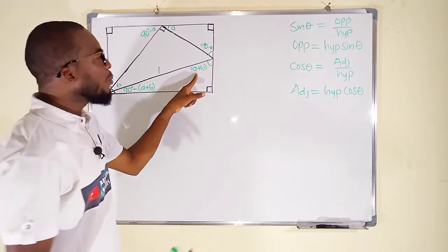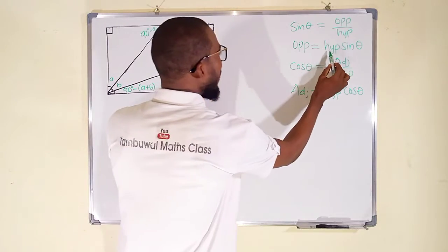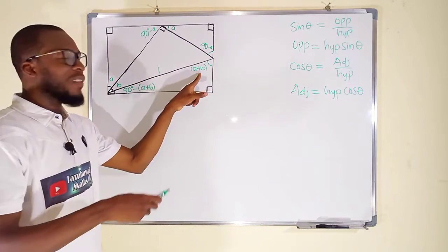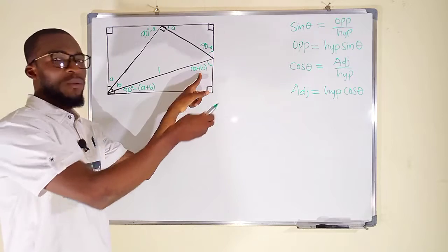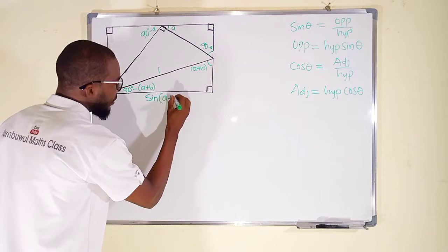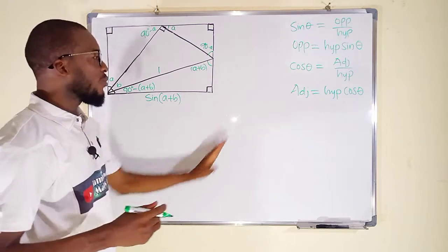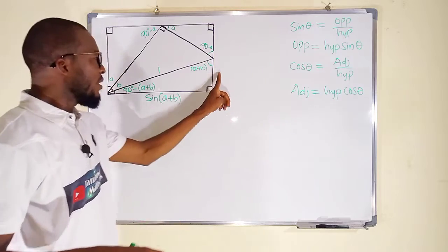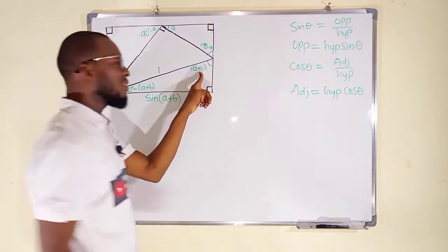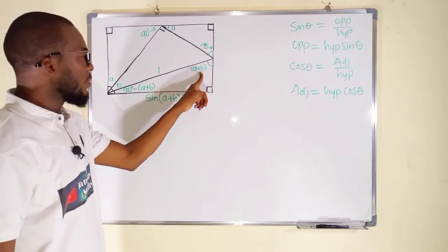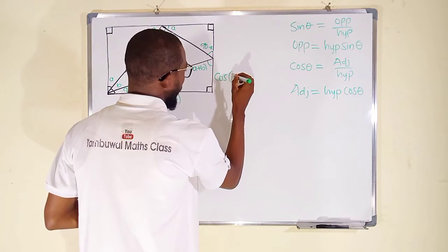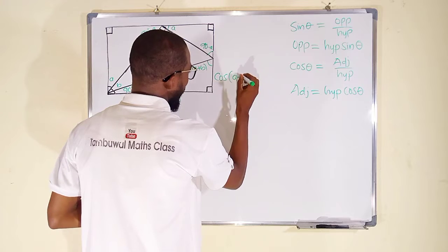Let's start with this side. This side is directly opposite to angle A plus B, and opposite equals hypotenuse multiplied by sine of that angle. The hypotenuse is one, so this gives us sine of A plus B. Moving to this direction, this side is adjacent to this angle, and adjacent equals hypotenuse multiplied by cosine of that angle. With hypotenuse equal to one, this gives us cosine of A plus B.